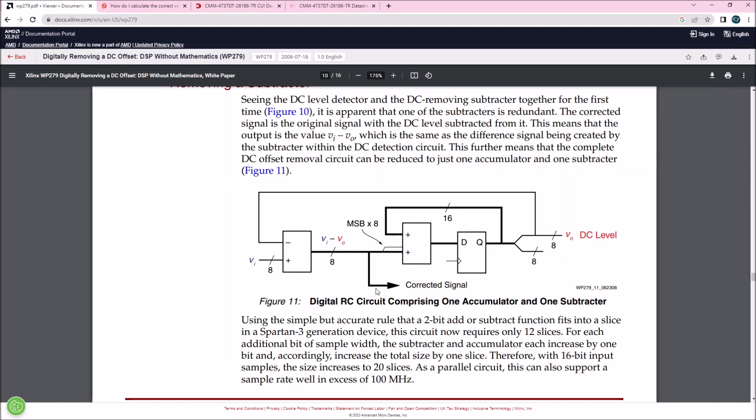If we tap here, before we sign extend to this 16 bit, if we tap here, we will actually have the corrected signal, the input samples with the DC offset removed by the subtractor. So this is the principle, works like a charm.